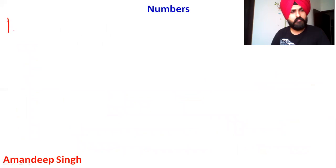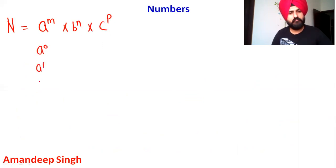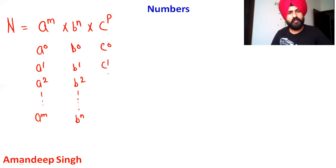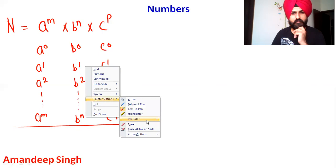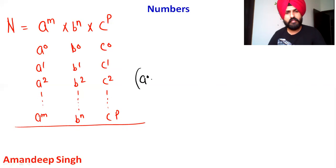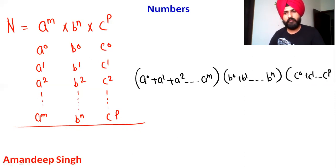So if a number N = a^m × b^n × c^p, then the sum of all factors is obtained by taking all allowed powers of each prime. For the first factor: a⁰ + a¹ + ... + a^m. For the second: b⁰ + b¹ + ... + b^n. For the third: c⁰ + c¹ + ... + c^p. Then add vertically within each group and multiply the three results together — that gives your sum of all factors.